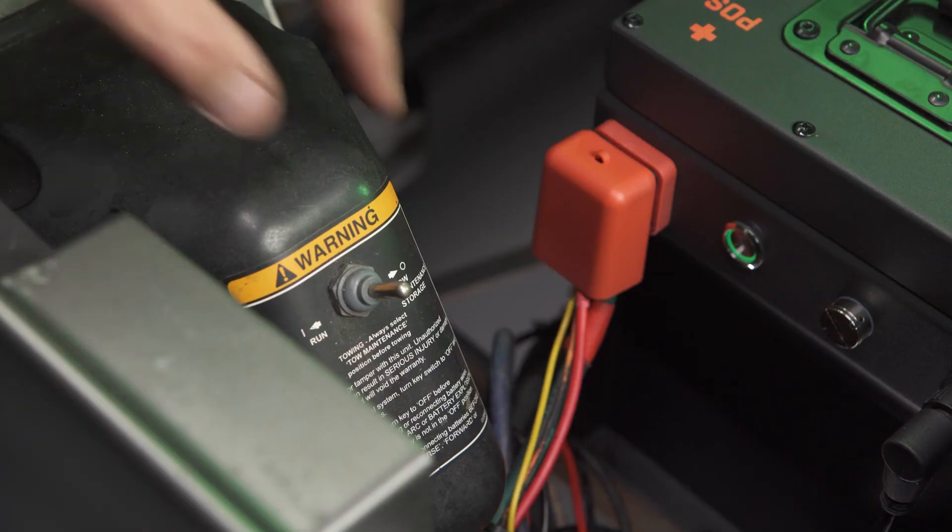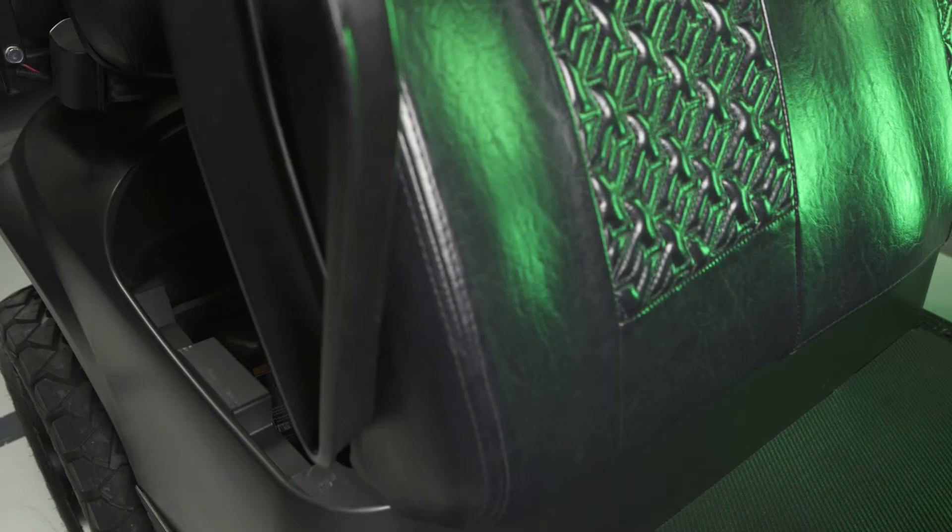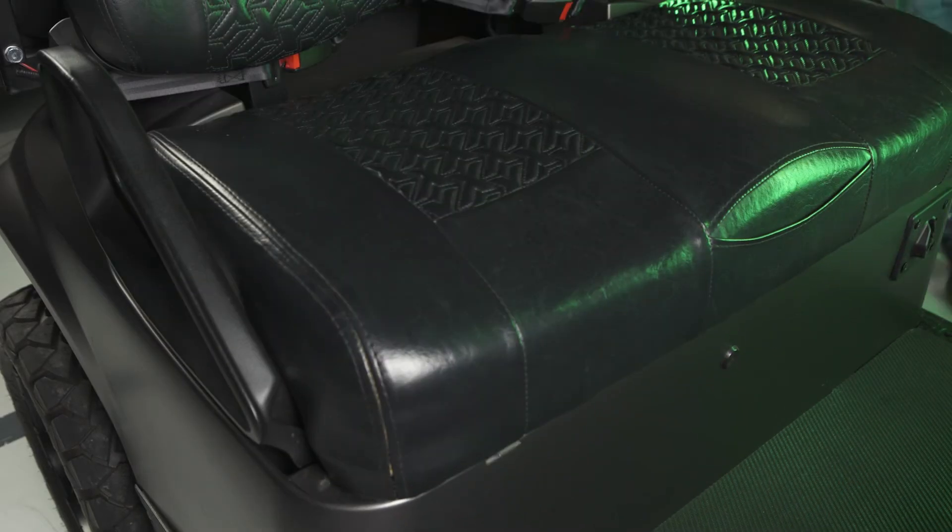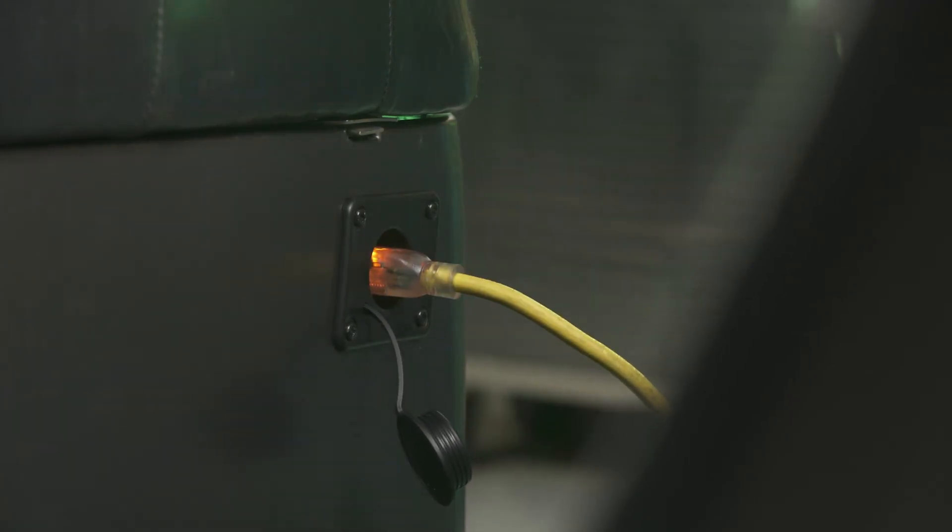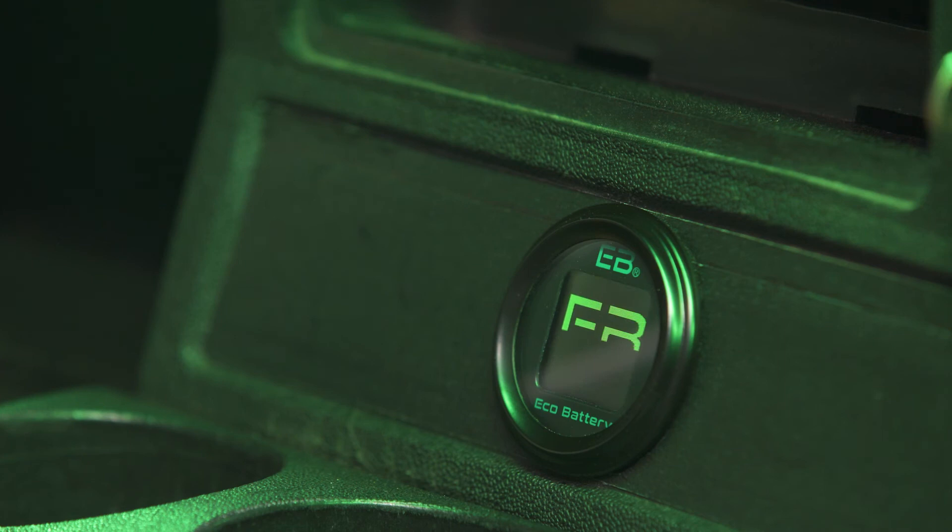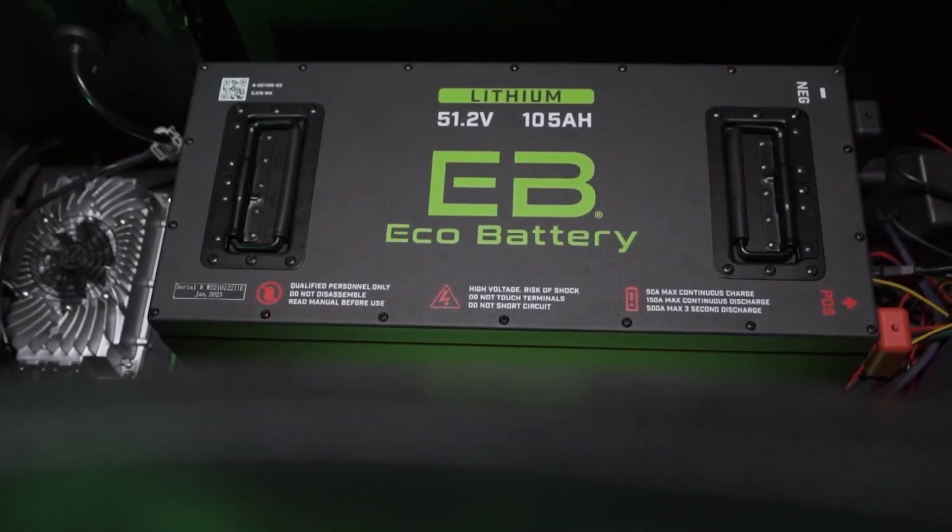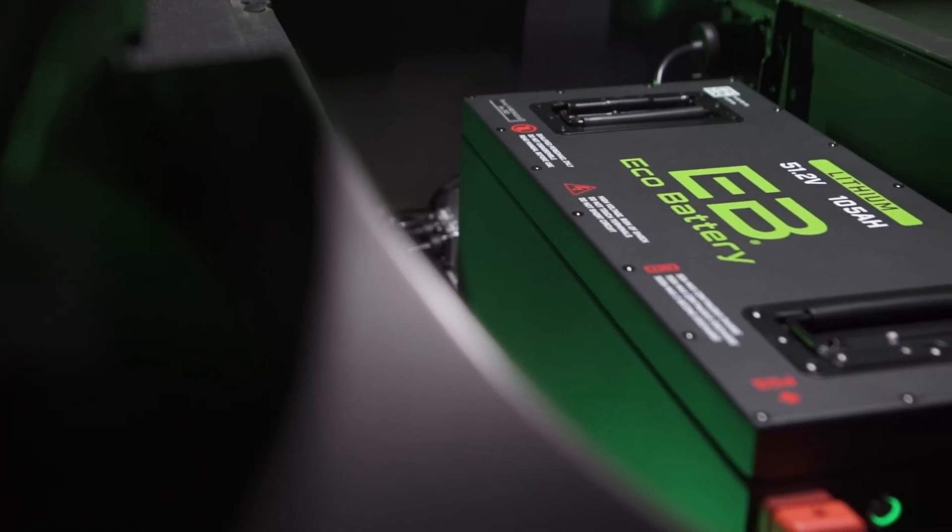Turn the tow run switch to run. Reinstall the seat. Test the cart to ensure it moves when the throttle is pressed. Check the 12-volt accessory function. Charge the battery fully before any extended driving. The LCD meter will self-calibrate to 100% after the first full charge cycle. Please refer to our user manual for additional information about the operation and care of your eco-battery lithium battery.